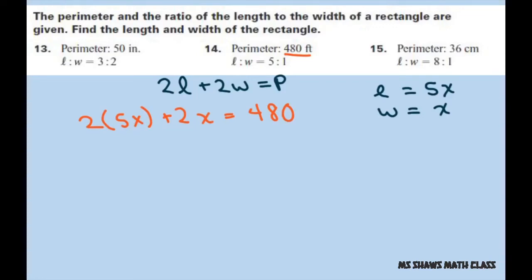We have 10x plus 2x equals 480. 12x equals 480. Divide both sides by 12. So you get 480 divided by 12. 12 goes into 480 four times, so x equals 40.